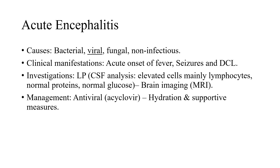Investigations usually depend on CSF analysis. In cases of viral encephalitis, we usually find elevated cells mainly lymphocytes — compared to meningitis where neutrophils predominate. In encephalitis, mainly lymphocytes with normal proteins and normal glucose. Sometimes brain imaging is used; in some cases of herpes encephalitis, there are hyperintensities in the temporal lobes. Management depends on antiviral therapy — acyclovir — plus hydration and supportive measures.